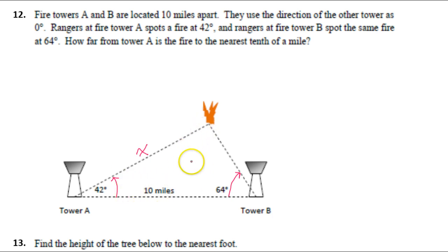In a triangle, the total degrees is always 180. So I'm going to start by doing 180 minus 42 minus 64. That should give me the angle up here at the fire. Okay, that turned out to be 74 degrees.